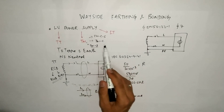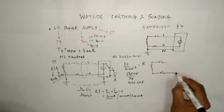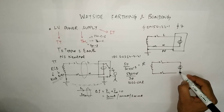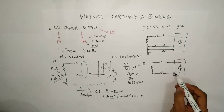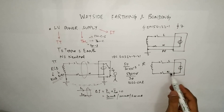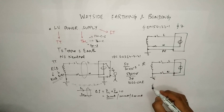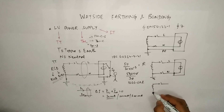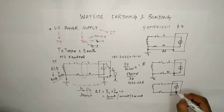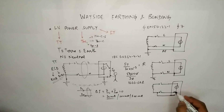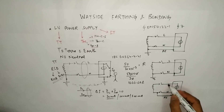For TNC, it is earth and neutral combined. The source feeds line and neutral to the load, and the earth conductor also acts as neutral — both are the same conductor. In the case of TNCS, for some portion the neutral and earth are the same, and later there is a dedicated conductor connected to the earth. Up to that split point it is TNC, and from there it becomes TNCS, where the PE conductor and neutral are separate.